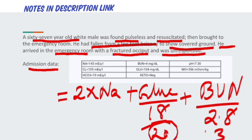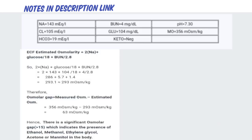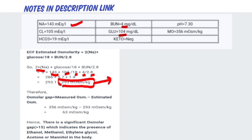Using the formula 2 × sodium + glucose/18 + BUN/2.8: sodium is 143, glucose is 104 (104/18), and BUN is 4 (4/2.8). The estimated osmolarity comes out to approximately 293 milliosmoles per liter, which is near normal.